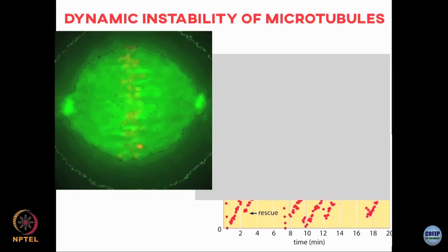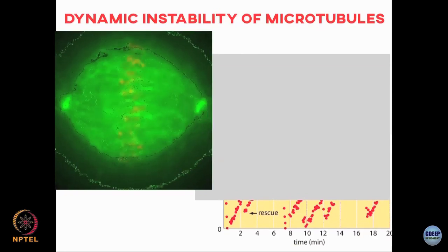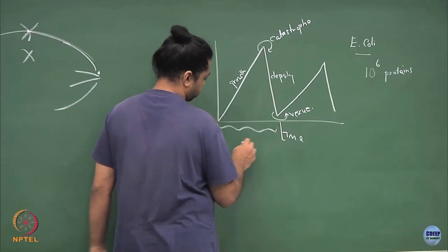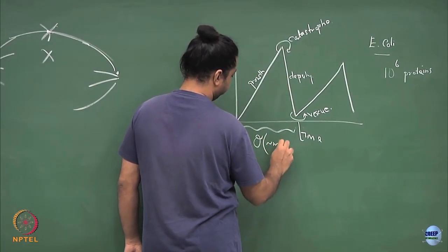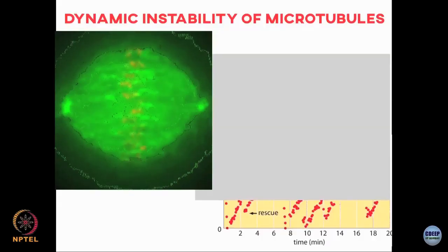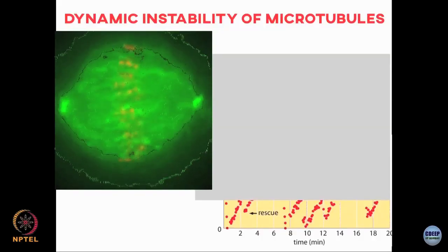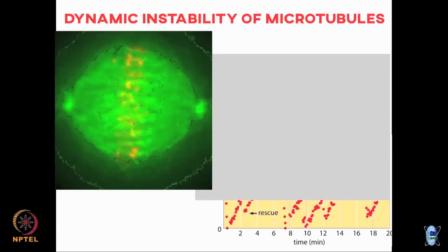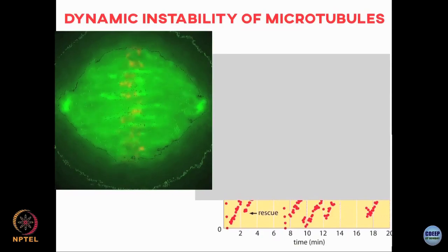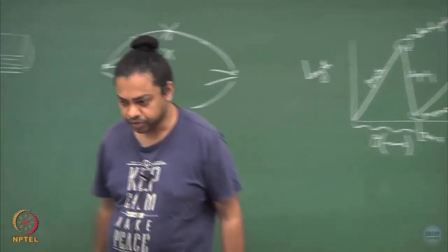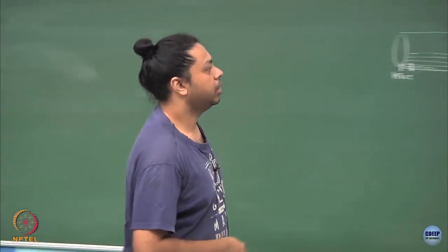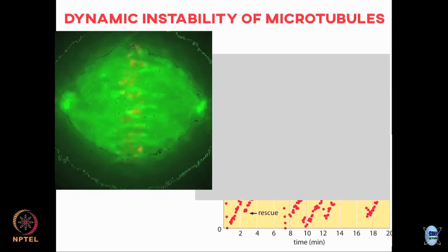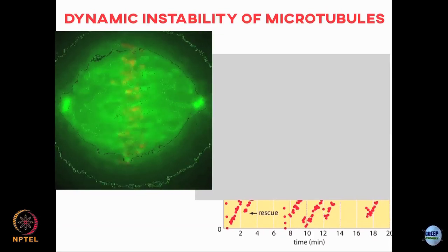The length scales of these phases are very different. Growth typically happens over time periods on the order of minutes — roughly 2 to 3 minutes for the growth phase. Whereas depolymerization happens very quickly, over the order of a few seconds. If you look at the microtubule length as a function of time, this is definitely not something in equilibrium — the length is constantly undergoing flux between a growth phase and a catastrophe phase.